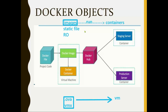There are already so many official images available — Docker has many official images. The storage place for images is called a registry. This terminology is important. An image is a static file; when you run it you get a container. All images are stored in something called a registry.